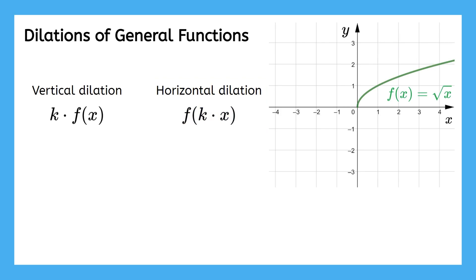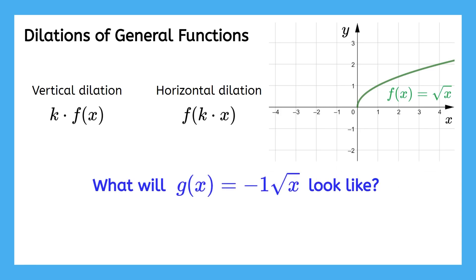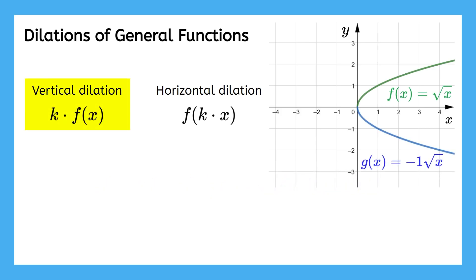It should also be noted what happens if we dilate by a negative number. If we perform a vertical dilation on the square root of x by a factor of negative one, it will be the same as a reflection across the x-axis. Multiplying by negative one is the same as putting a negative in front of the function, which is what we do for a reflection. Any dilation by negative one is the same as a reflection. For this lesson, to avoid possible mix-ups with reflections, we're going to only work with dilations by positive numbers.